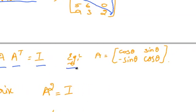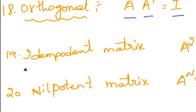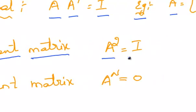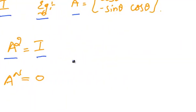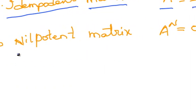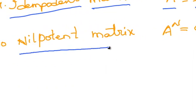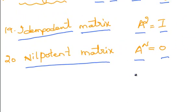An example of an orthogonal matrix: A equals the matrix with entries cos θ, sin θ, −sin θ, cos θ. Idempotent matrix — if A² is equal to I, then that matrix is said to be an idempotent matrix. Nilpotent matrix — if Aⁿ is equal to 0, then that matrix is said to be a nilpotent matrix.